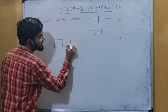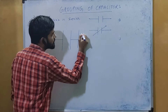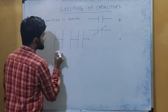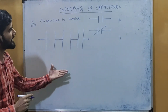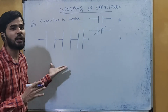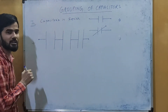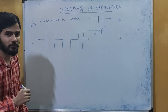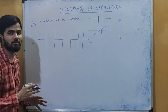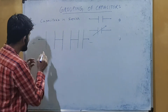For capacitors in series: here we have one capacitor, at this end of the first capacitor we connect another capacitor, and here we connect one more capacitor. This combination is called the series combination. On one side we connect it with the positive terminal of the battery and on the other side with the negative terminal.